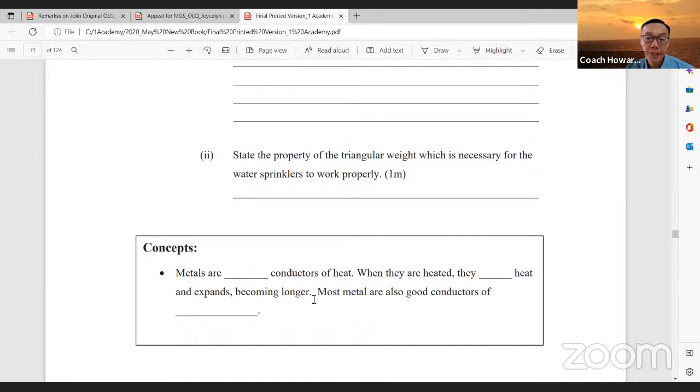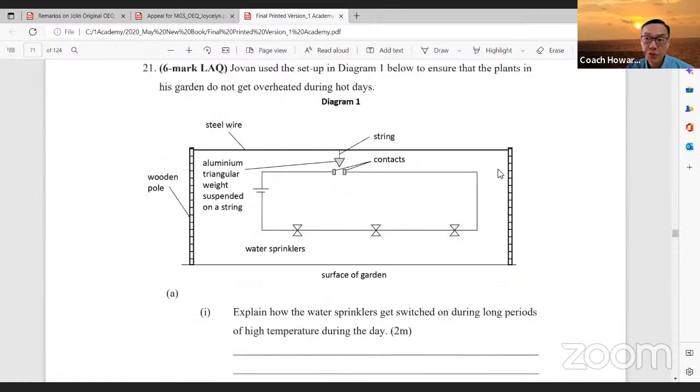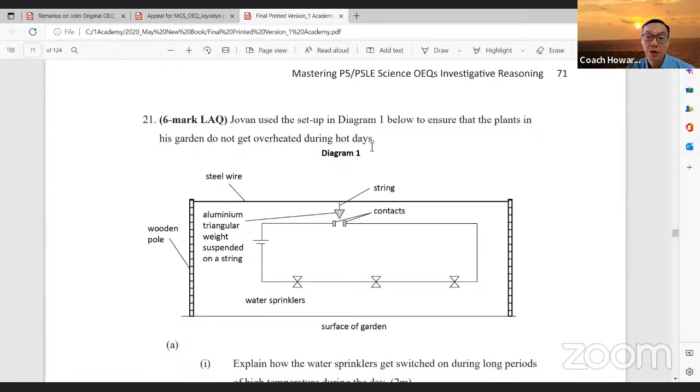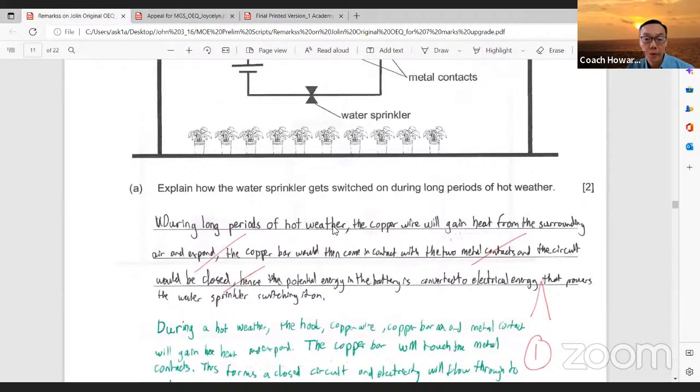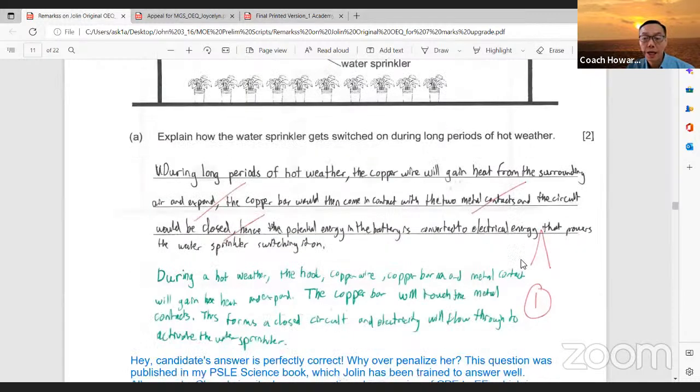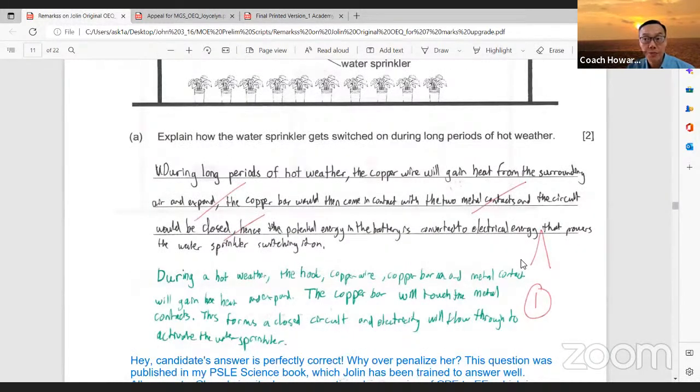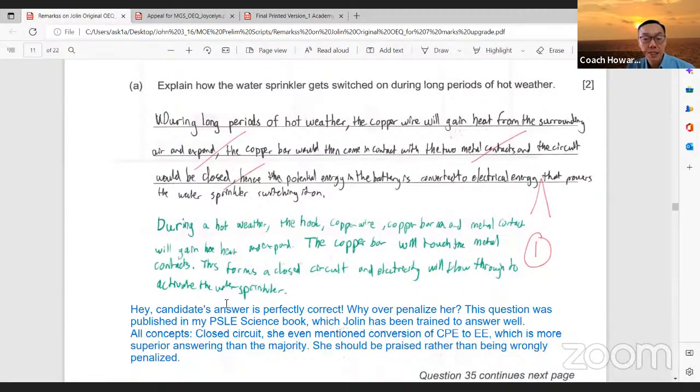As I scroll down, you can actually see these are high quality worksheets. When I teach this question, I teach the concept. I ask the student to write down the concepts below. Metals are good conductors of heat. When they are heated, they gain heat and expand, become longer. Most metals are also good conductors of electricity.